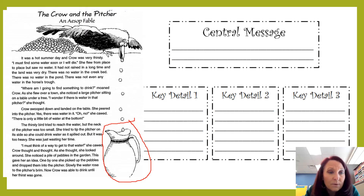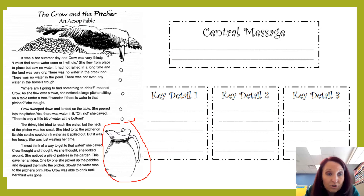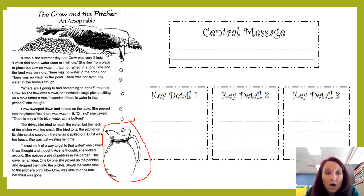'Where am I going to find something to drink?' moaned crow. As she flew over a town, she noticed a large pitcher sitting on a table under a tree. 'I wonder if there's water in that pitcher,' she thought. Crow swooped down and landed on the table. She peered into the pitcher. Yes, there was water in it. 'Oh no,' she called, 'there is only a little bit of water at the bottom.' The thirsty bird tried to reach the water, but the neck of the pitcher was too small. She tried to tip the pitcher on its side, but it was too heavy. 'I must think of a way to get to that water,' she cawed. Crow thought and thought, and as she looked around, she noticed a pile of pebbles in the garden. One by one, she picked up the pebbles and dropped them into the pitcher. Slowly the water rose to the pitcher's brim, and now the crow was able to drink until her thirst was gone.